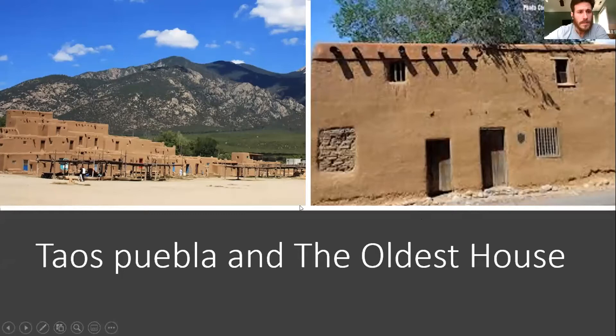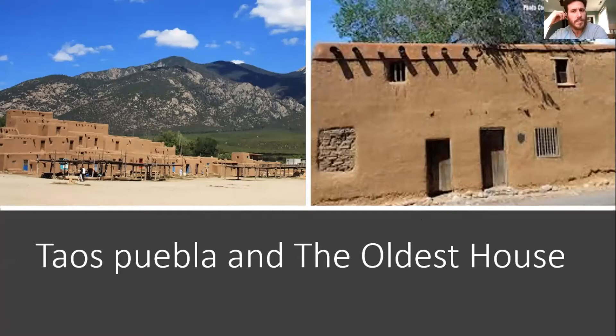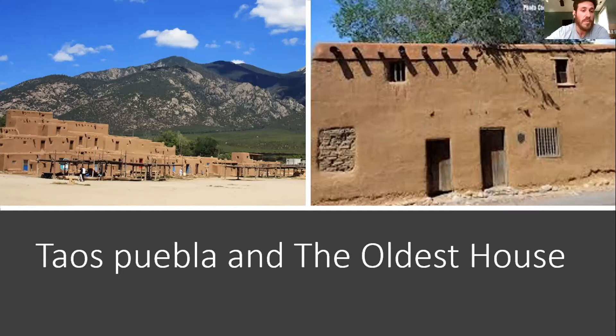This slide demonstrates the longevity of adobe structures. On the right is a structure called the oldest house — I couldn't find documentation that it's definitively the oldest inhabited house in the US, but it's from the 1640s and was continuously occupied until about 30 years ago when it was turned into a museum. On the left is a Puebloan village in Taos that has been there for more than a thousand years. Outside of a little maintenance here and there — more plaster on the roof and walls — it has stood like that for that long.